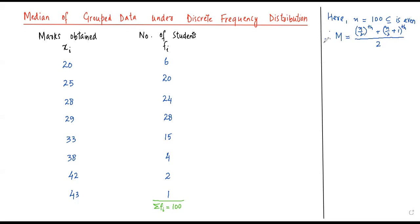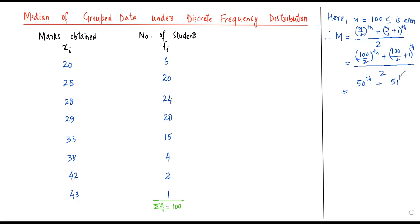Now n = 100, so we need: (100/2)th observation = 50th observation, and (100/2 + 1)th observation = 51st observation, whole divided by 2. So all we need to do is find the 50th and the 51st observations, add them, and divide by 2. That will give us the required median.